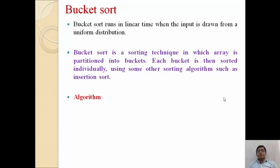Bucket sort is a sorting technique in which an array is partitioned into buckets. Each bucket is then sorted individually using some other sorting algorithm such as insertion sort. We have a list of numbers; we divide it into different parts — these parts are simply known as buckets. We store elements in different buckets based on some range, then sort every bucket into ascending order using insertion sort.